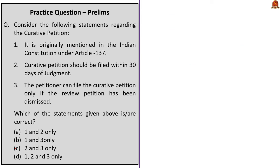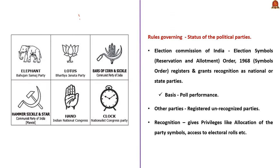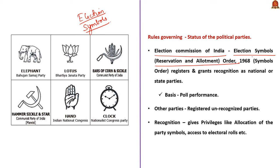Now, let us look at election symbols — how election symbols are allocated to different parties. This was recently in news because there were many issues regarding allocation of election symbols and many parties are appealing about it. Election Commission of India is responsible for allocating symbols to political parties, and it follows the guidelines laid out in the Election Symbols Reservation and Allotment Order 1968. This order aims to regulate symbol specification, reservation, and allotment during elections.